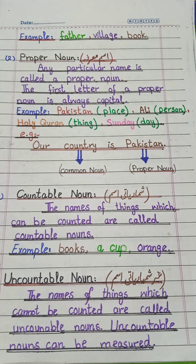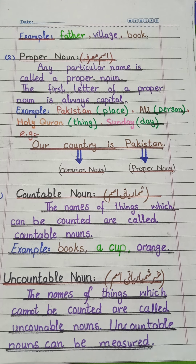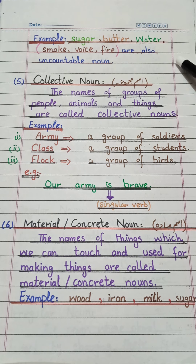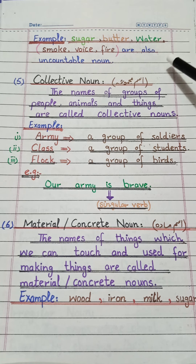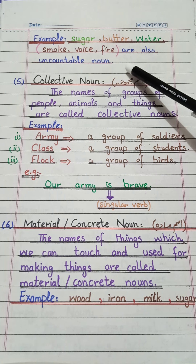Our next kind is uncountable noun. The names of things which cannot be counted are called uncountable nouns. Uncountable nouns can be measured. Examples: sugar, butter, water — these are uncountable nouns because we can't count them. Smoke, voice, and fire are also uncountable nouns because we can neither count nor measure them.